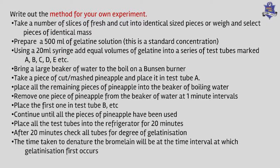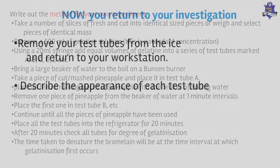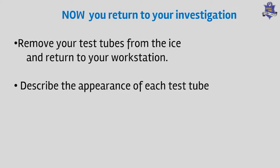After 20 minutes, examine the test tubes and see which gelatine has set and which hasn't — where the gelatine starts to set indicates when the enzyme activity stopped. Describe what you see in each test tube: note any colour change, then take a skewer and poke the gelatine. One will be firmer, very similar to your control, while the others won't be.